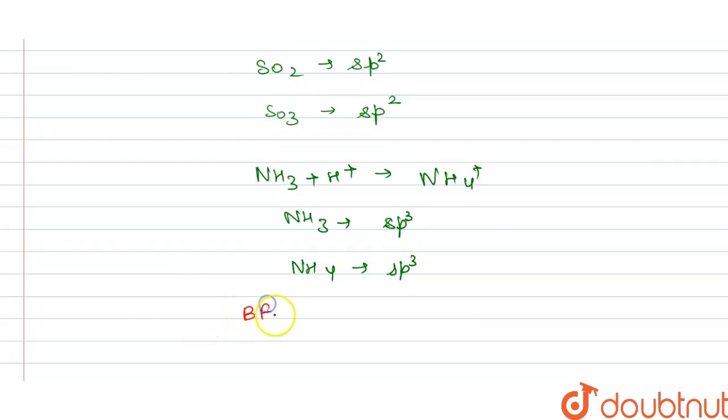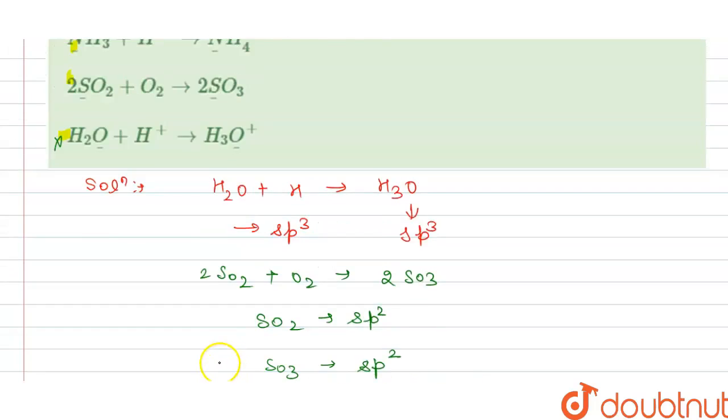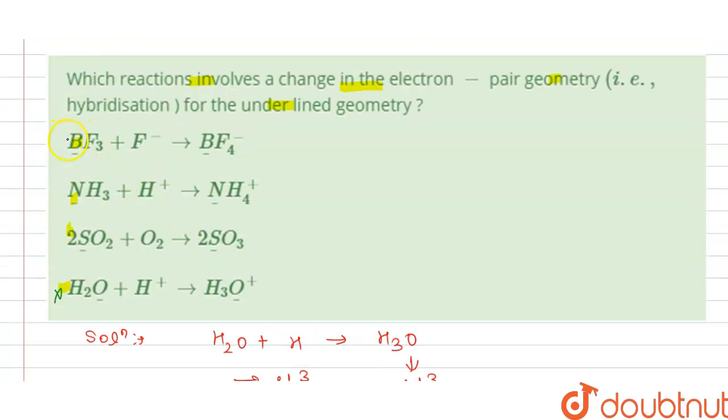NS3 plus F, and this gives us FBF4 minus. In this we have, this has the sp2 hybridization and this has sp3 hybridization. So from this we can say that change occurs in option A. So our option A is correct.